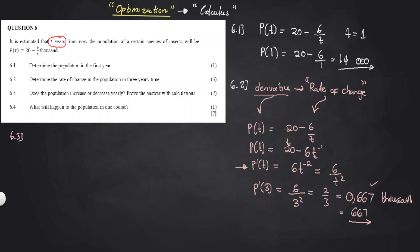For 6.3, does the population increase or decrease yearly? Prove the answer with calculations. Initially I thought it was decreasing because of the subtraction in the equation — subtracting from 20 suggested a decrease. But that intuition alone is not a good enough explanation, so we need to prove it by choosing two consecutive years and substituting.